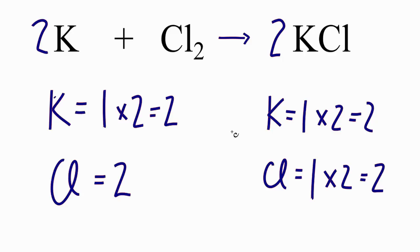So now we have two potassiums here, two on this side, two chlorines, and two chlorines here. This equation is balanced.